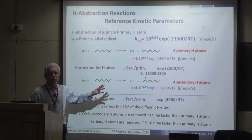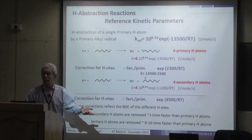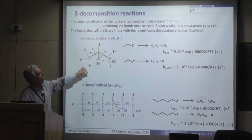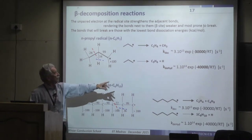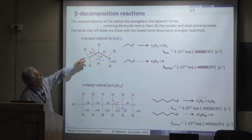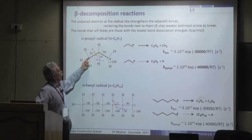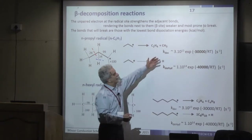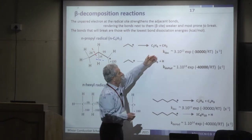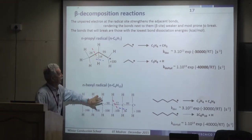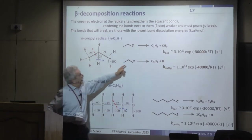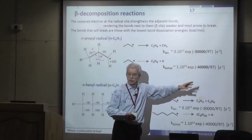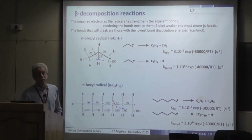These rules define H abstraction reactions and the resulting alkyl radicals. We discussed beta decomposition yesterday: once alkyl radicals form, beta decomposition occurs because the radical reduces the C–C bond dissociation energy at the beta position. As a reference, the same kinetic parameters apply for both normal propyl and normal hexyl. H dehydrogenation of alkyl radicals requires activation energy around 40 kcal/mol and is less favored than beta decomposition.